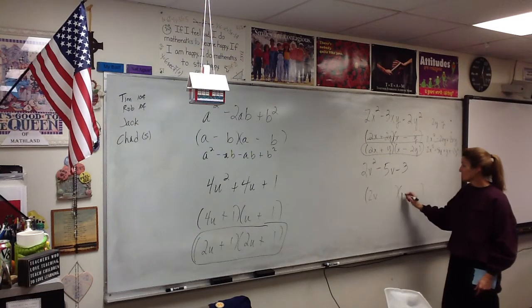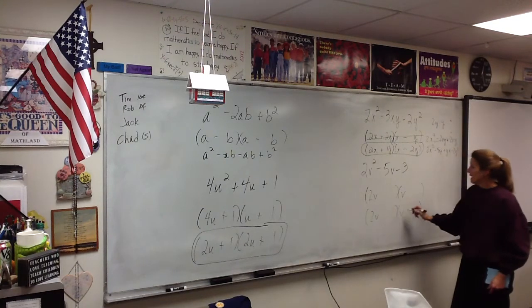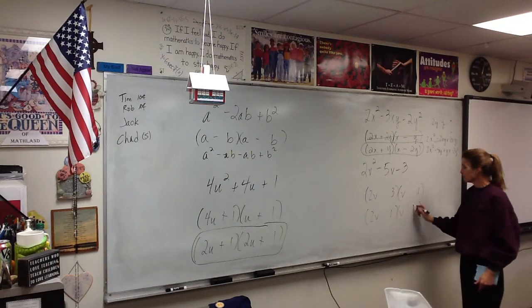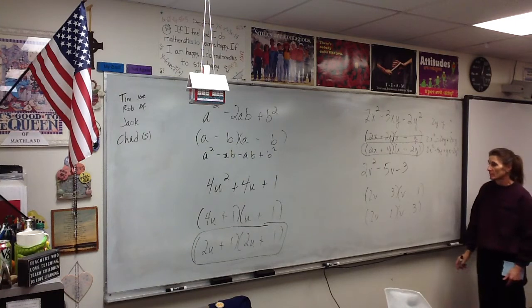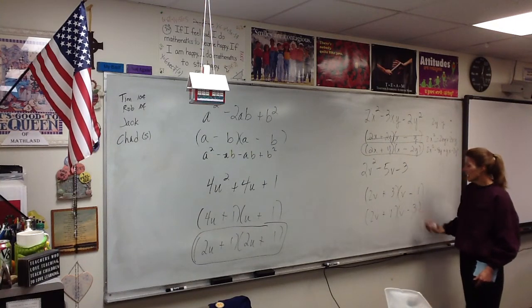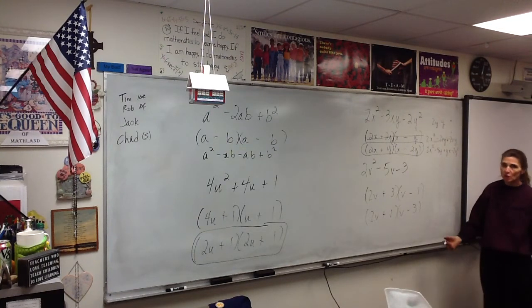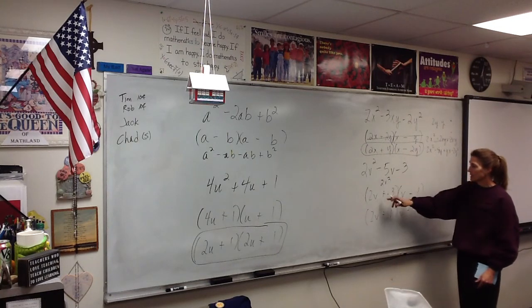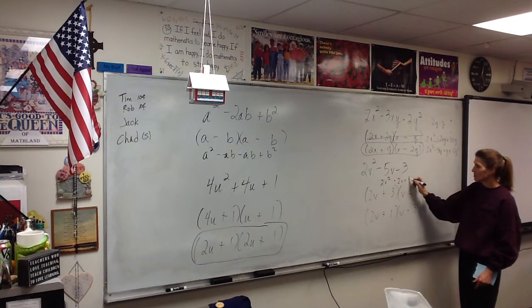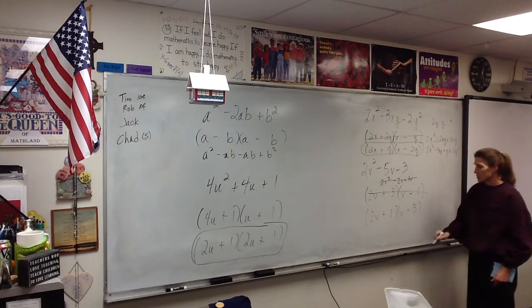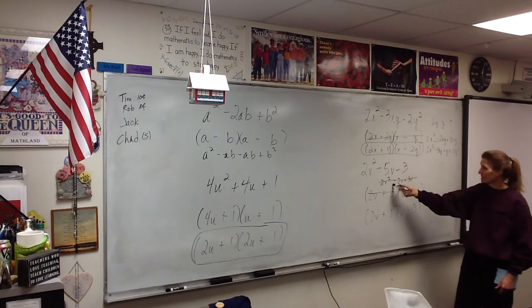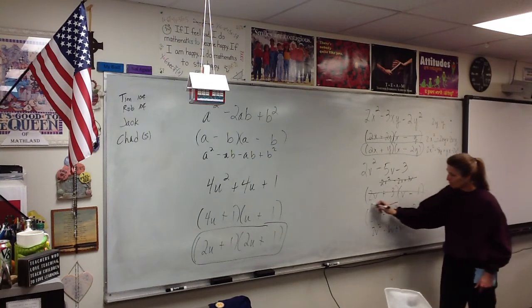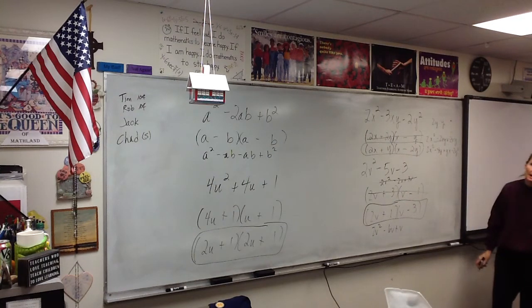The first term has to be 2v and v. The second term has to be 3 and 1, but I don't know which order, so I'll try both. I need a negative, so I'll have a plus and a minus. FOILing the first arrangement gives 2v² − 2v + 3v, which doesn't work. FOILing the second arrangement gives 2v² − 6v + v — and there it is. Everything worked out perfectly, and there's my factorization.